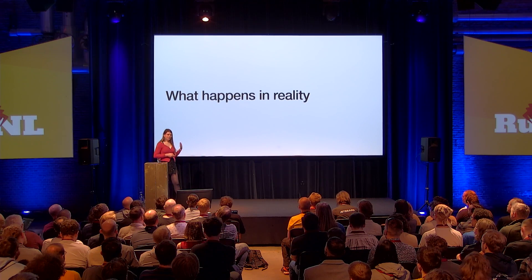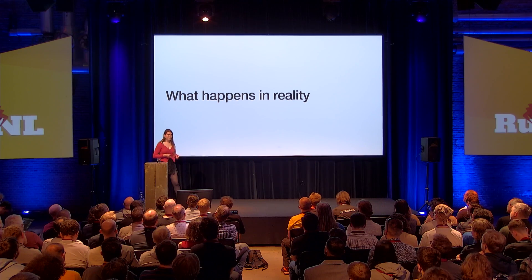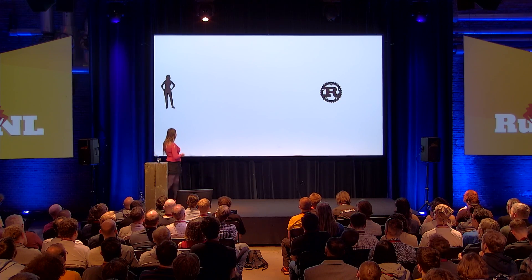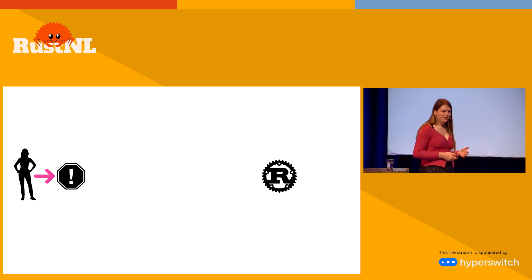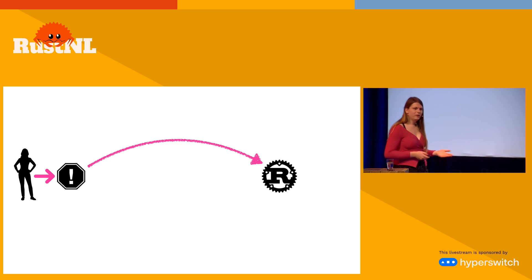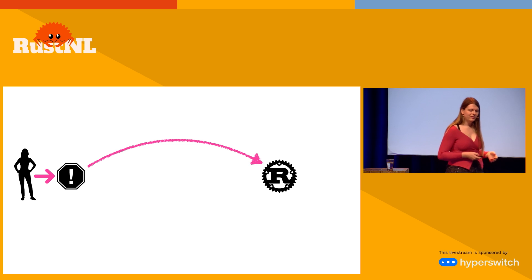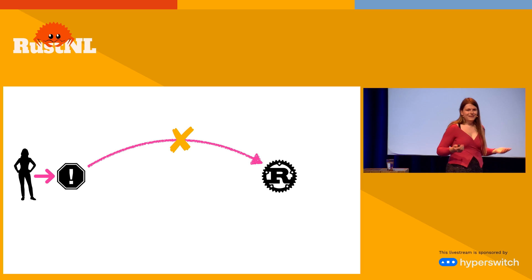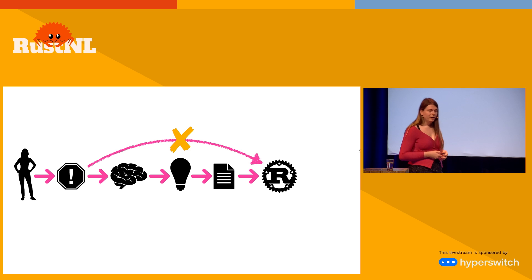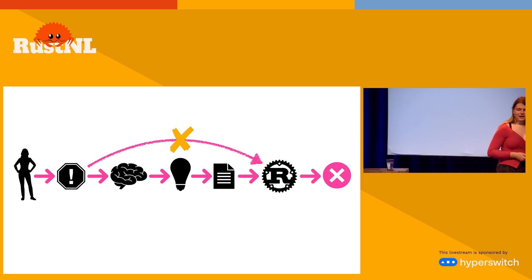Let's zoom into one particular frustrating sequence of events that happens in reality a lot. It starts with the user and the Rust project — this user has a complicated problem, something where there are multiple possible solutions and it will interact with other problems. So this user wants to come talk to us, the Rust project, because we have all the context — except we just don't have a process for this. The process for changing Rust is by submitting a solution, not just talking about problems. So you follow this process instead: you think about your problem, come up with an idea, write it down, submit your solution to the project. And then we say no.